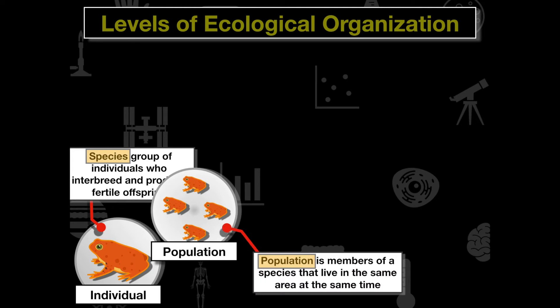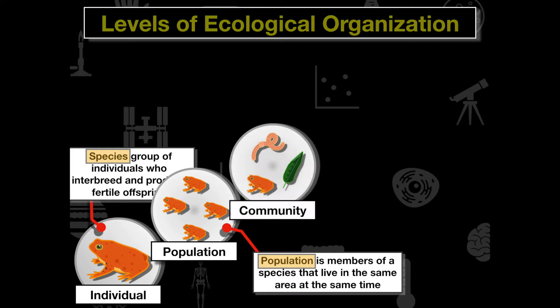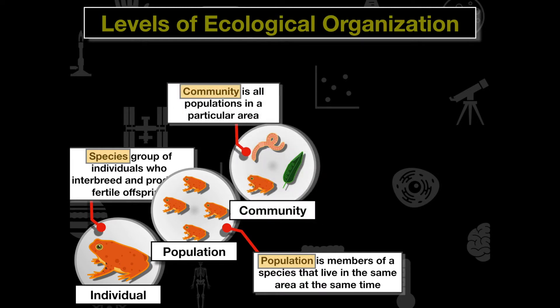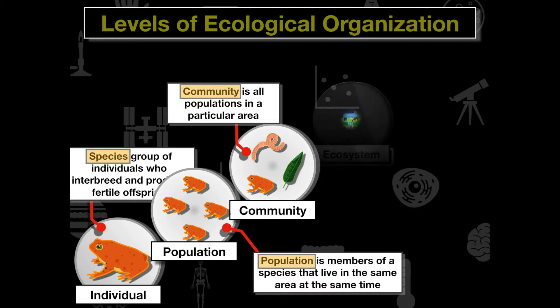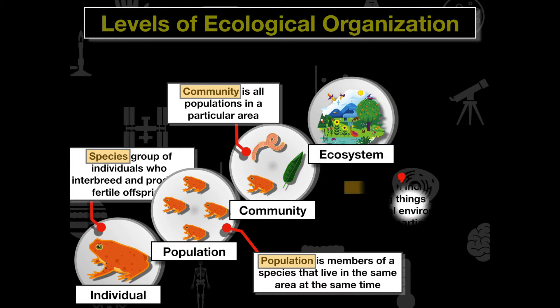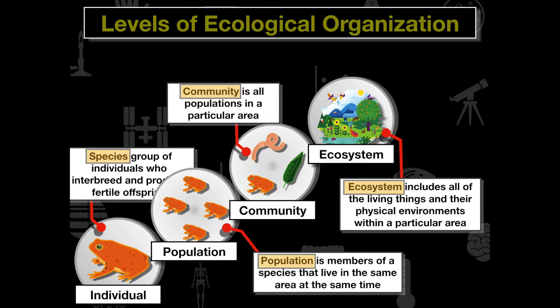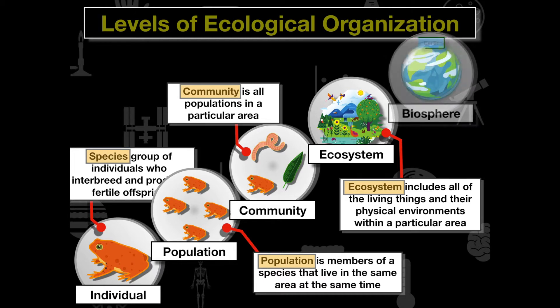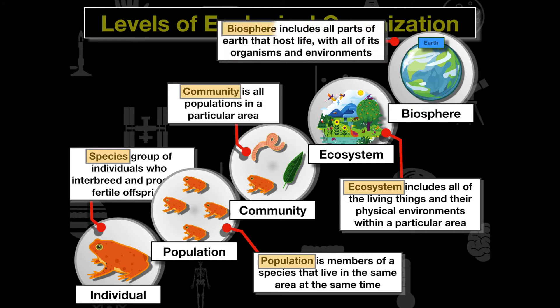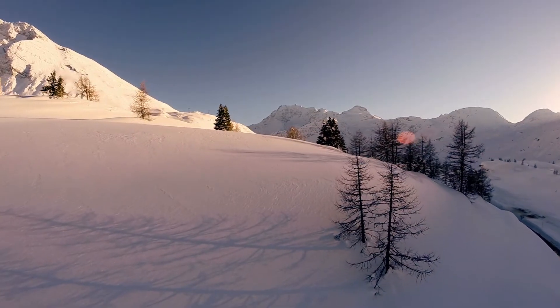Moving up the hierarchy, a population is members of the same species that live in the same area. A community is all the populations within a particular area. An ecosystem includes all the living things and the physical environments within a particular area. Finally, the biosphere is all parts of earth that host life.